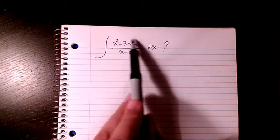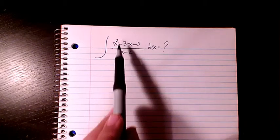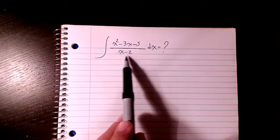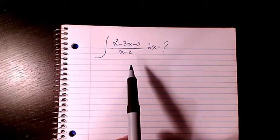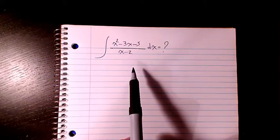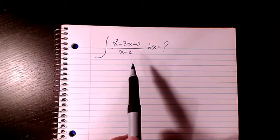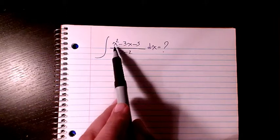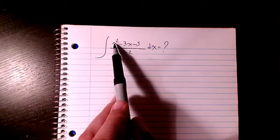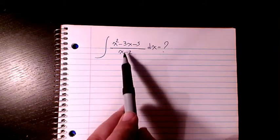Unless you need to do factoring and cancel some part of the numerator. But in this case, the order of the numerator is 2 and the order of the denominator is 1, so I'm going to use long division.